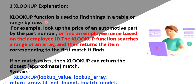Next is XLOOKUP. V is for vertical, H is for horizontal. If you want to match both rows and columns together, you can use XLOOKUP. It finds things in a table by row. If you want to find the price of an automotive part by number, you can use XLOOKUP. If there is a match, it returns the first match found; if no match, it returns the closest approximate match. Note: some versions of Excel do not support this function.